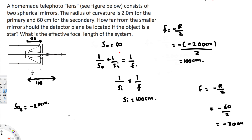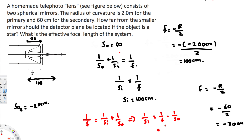To find the image distance from the secondary mirror, we use 1 over F equals 1 over SI plus 1 over SO. Rearranging: 1 over SI equals 1 over F minus 1 over SO, which gives 1 over negative 30 minus 1 over negative 25. Simplifying this expression, we get SI equals 150 centimeters.